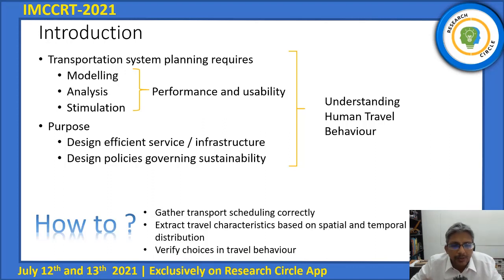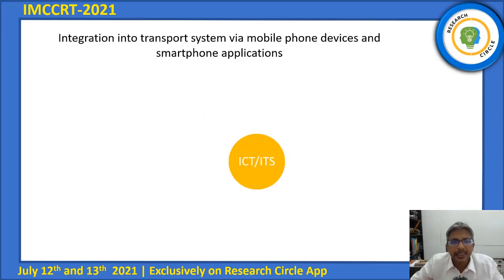Now, how do we achieve this? By gathering transport scheduling correctly, extracting travel characteristics based on spatial and temporal distribution, and verifying choice in travel behavior. To date, citizens are mostly contributing users of smartphone applications. Thus, continuous updates on transportation availability can be easily obtained with the integration of ICT, also known as Intelligent Transportation System (ITS), via mobile devices and installed software systems.